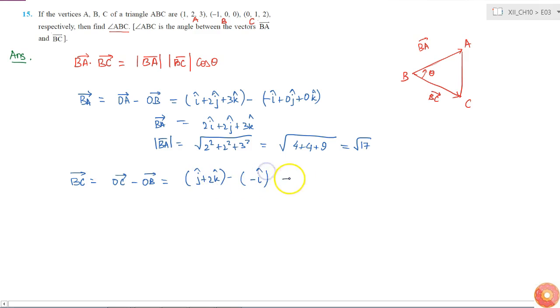This equals i cap plus j cap plus 2k cap. So this is our BC vector. The magnitude of BC equals square root of 1 plus 1 plus 4, which is square root 6.